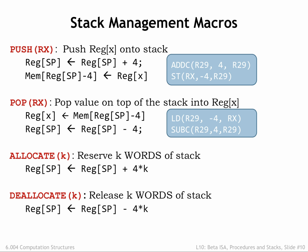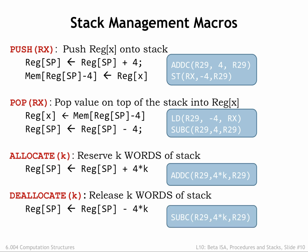For PUSH, we first allocate the word on the stack, then initialize it. If we did it the other way around and execution was interrupted between the initialization and allocation, code run during the interrupt which uses the stack might unintentionally overwrite the initialized value. But assuming all code follows stack discipline, allocation followed by initialization is always safe. The same reasoning applies to the order of the POP instructions: we first access the top of stack one last time to retrieve its value, then we deallocate that location. We can use the ALLOCATE macro to reserve a number of stack locations for later use, sort of like PUSH but without the initialization. DEALLOCATE performs the opposite operation, removing N words from the stack. In general, if we see a PUSH or ALLOCATE in an assembly language program, we should be able to find the corresponding POP or DEALLOCATE, which indicates that stack discipline is maintained.